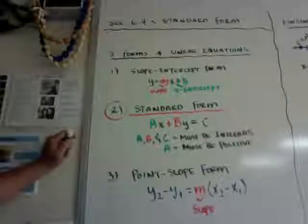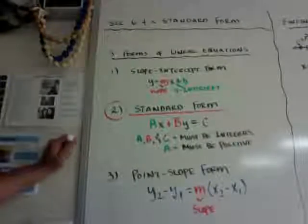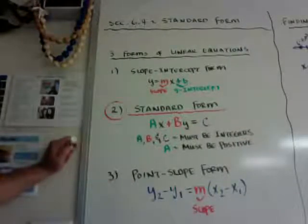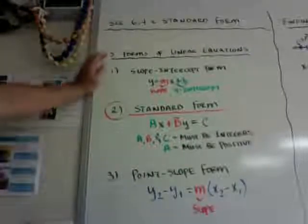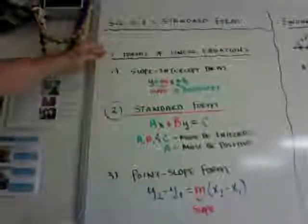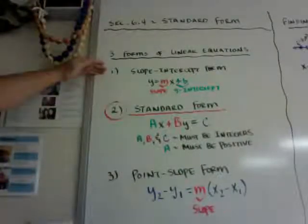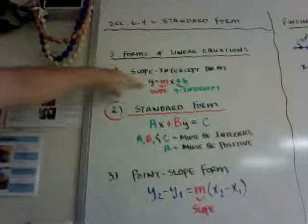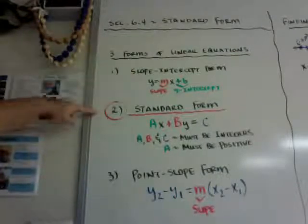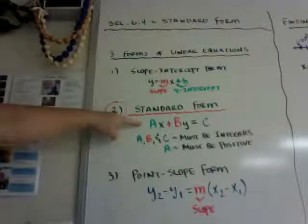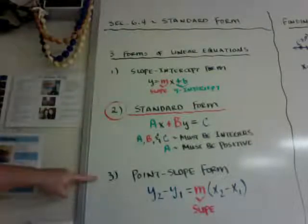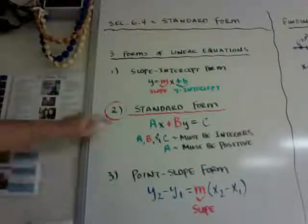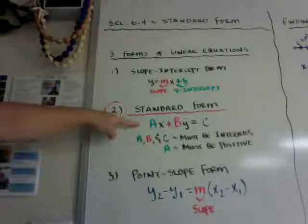Hi guys, this lesson is on section 6.4, which is the standard form. If you remember the three forms of linear equations, we had slope intercept, which is y equals mx plus b. The second form is standard form, which is ax plus by equals c. And then the third one is point slope. Today we're doing ax plus by equals c.